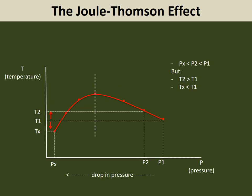As you can see, the curve obtained has a positive and a negative slope, as well as a maximum point. The temperature will drop, but that will depend on where your starting point is. You can either observe a rise in temperature, like here in T2, or a drop in temperature that is seen with Tx.